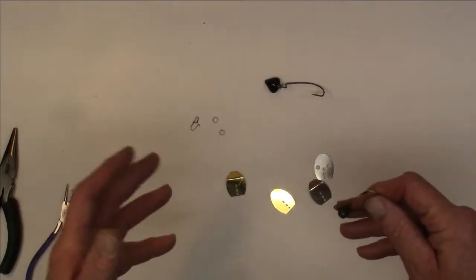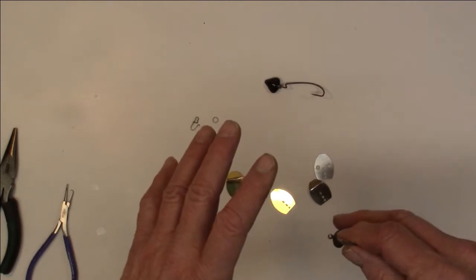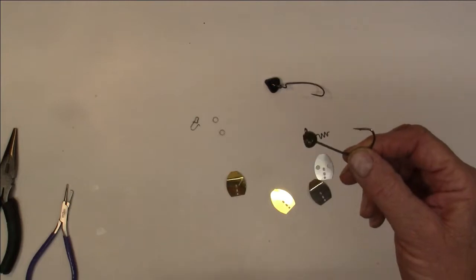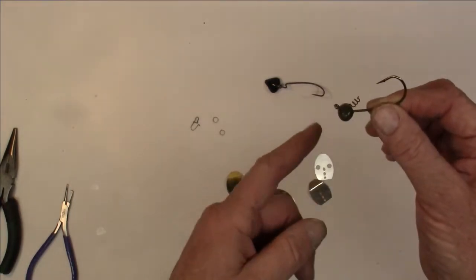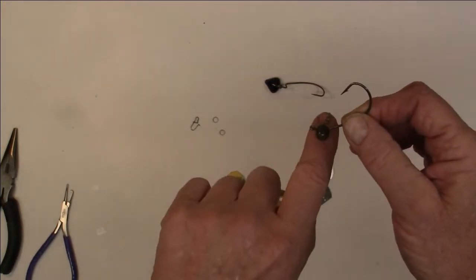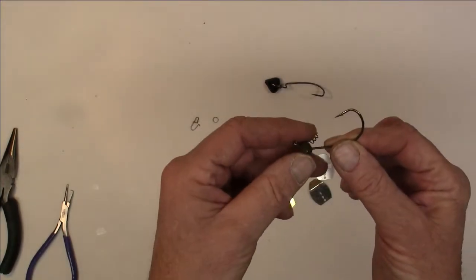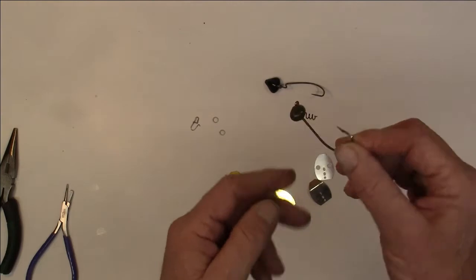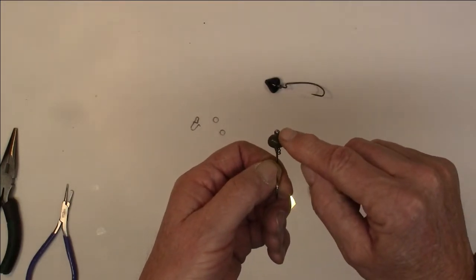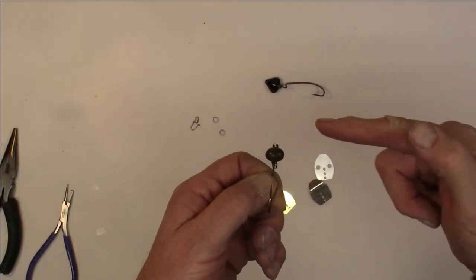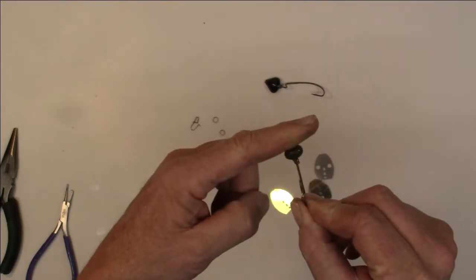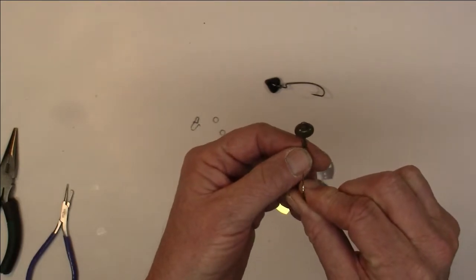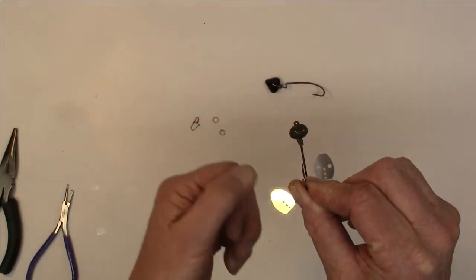Now where we're going a little bit different, instead of our standard chatterbait we're gonna go with some weedless versions. What we're gonna start out with here is a football head shaky head. This one's by Bass Pro Shop, but the key to it is our line tie has to be horizontal. It's got to be sticking sideways with the lure, it can't be sticking lengthways with it.